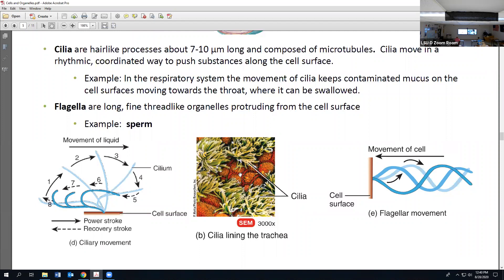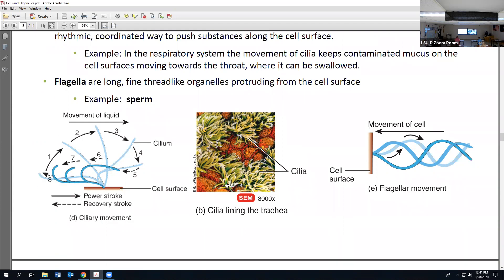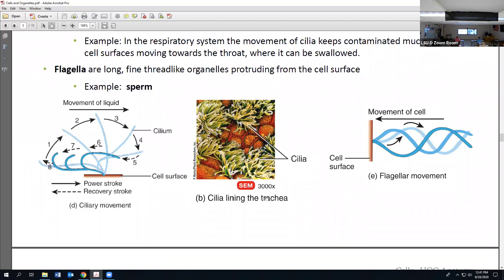Cilia don't move the cell, but they move substances across the surface of the cell like a conveyor belt. They push the stuff along. When we breathe in dust, it gets trapped in our trachea by mucus that lines our trachea, and then that mucus and dust gets pushed up and out. We can cough it out. That way it actually gets digested in our stomach, which is kind of gross but actually is super important and healthy. Other places cilia are found, like in the female's fallopian tubes to help push the egg towards the uterus when she's ovulating.